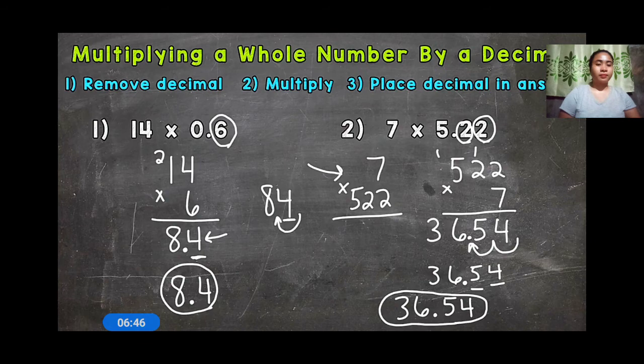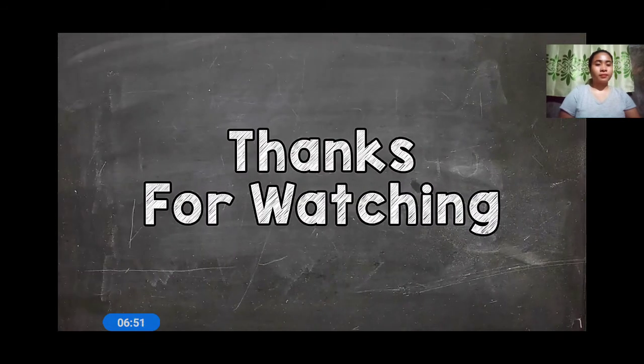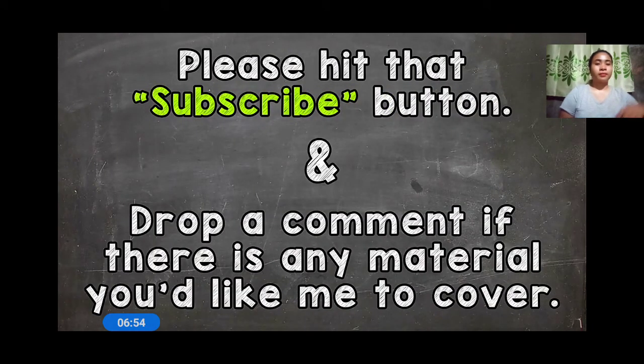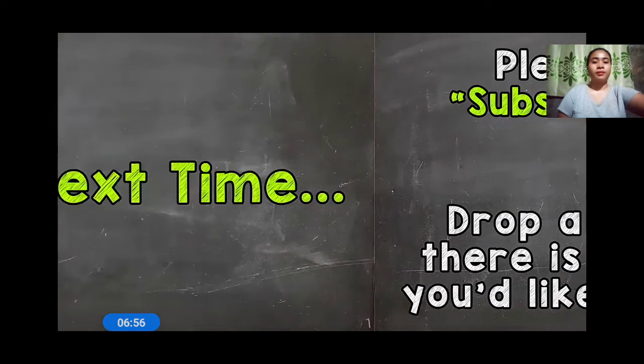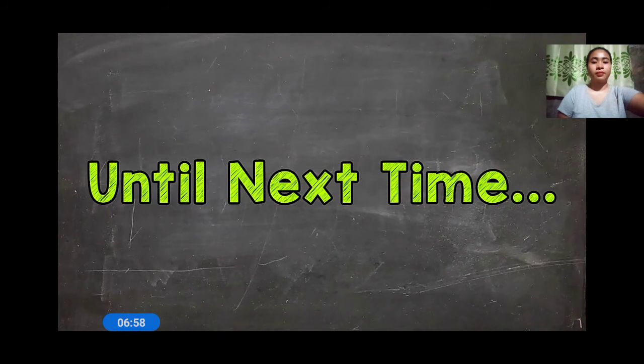So there you have it — that's how you multiply a whole number by a decimal. I hope that helped. Thanks so much for watching. That's how you multiply decimals to a whole number or mixed decimals. First, you're going to remove the decimal, then you're going to multiply, and then you are going to place the decimal in the answer.